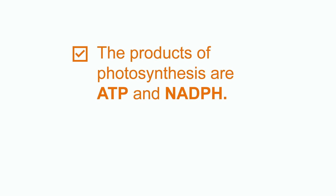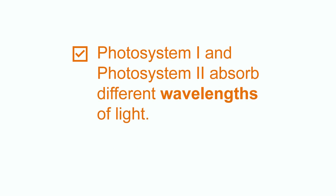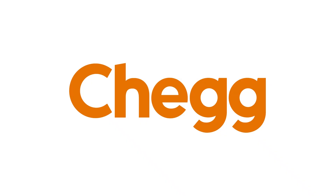The products of photosynthesis are ATP and NADPH, and photosystem 1 and photosystem 2 absorb different wavelengths of light. Thank you scientists for following along today — I encourage you to keep watching and keep learning.